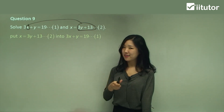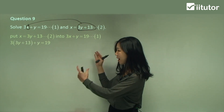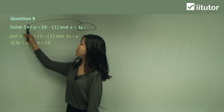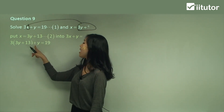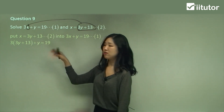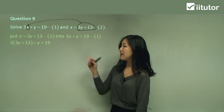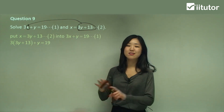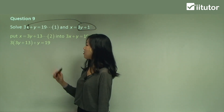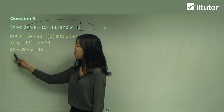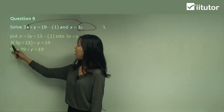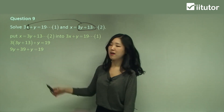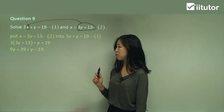Use brackets. It becomes: three times (3y plus 13) plus y equals 19. Now we no longer have x, we just have y. Expand out the brackets: 3 times 3y is 9y, and 3 times 13 is 39, plus y equals 19. Be careful with your expansion.